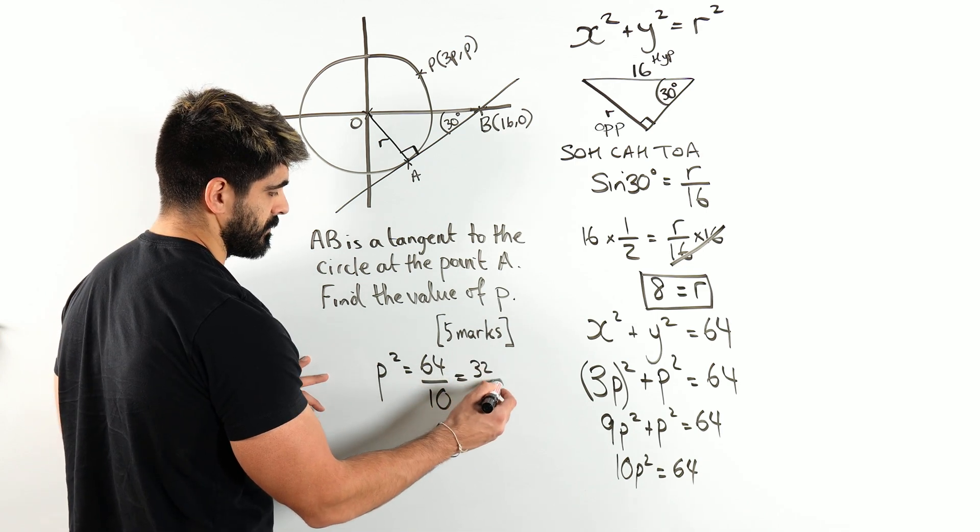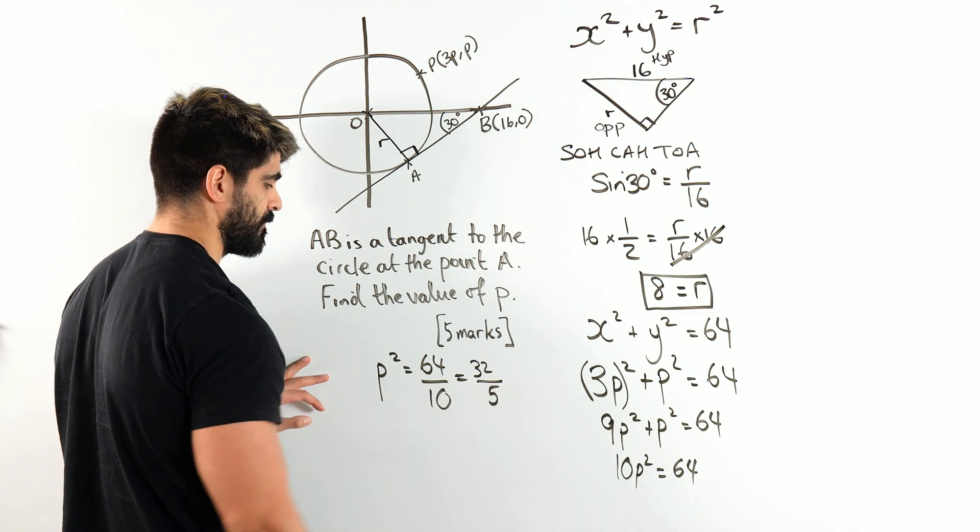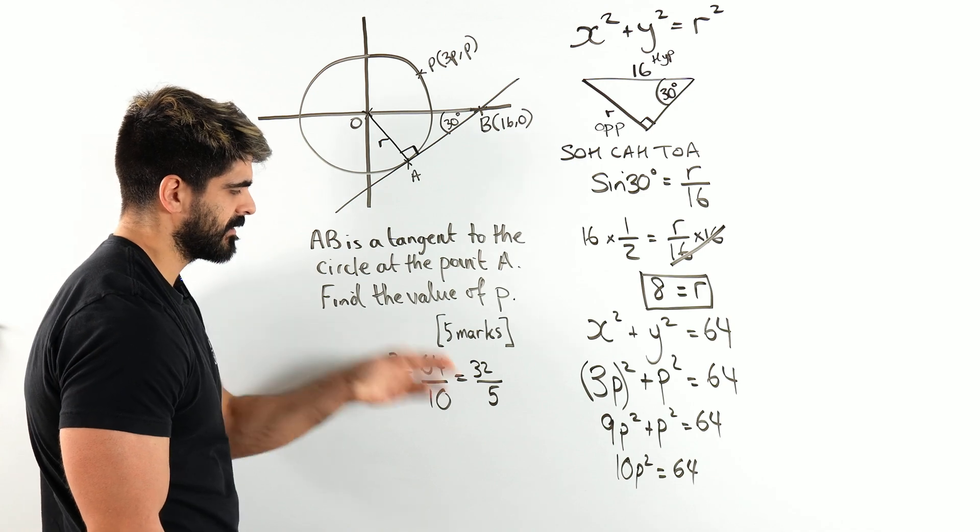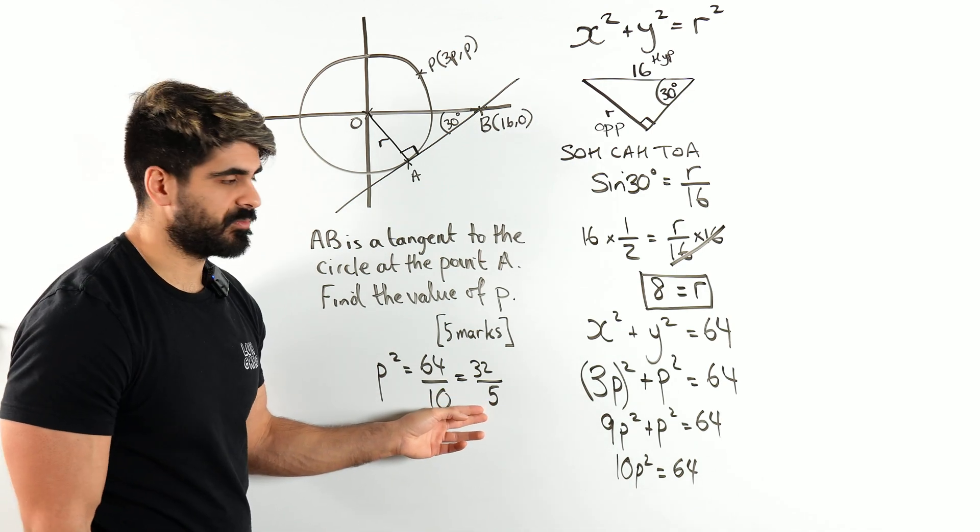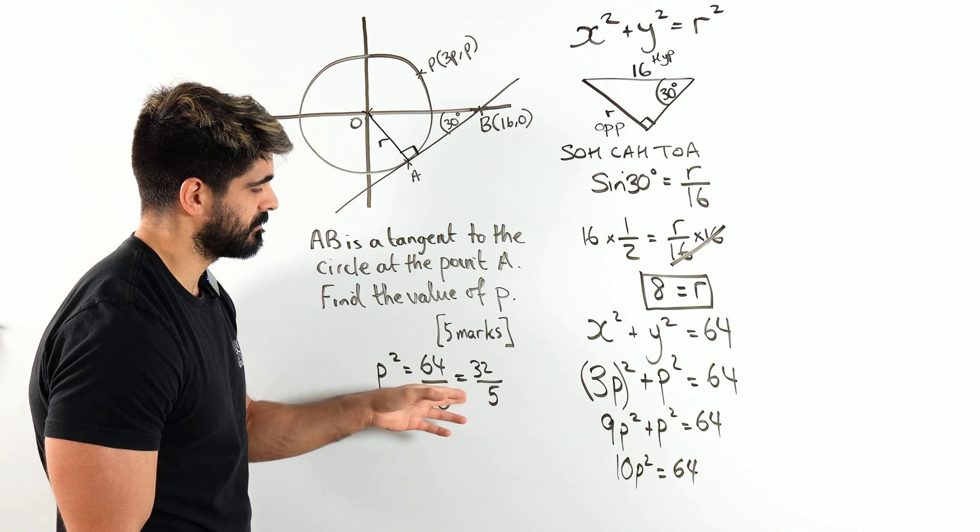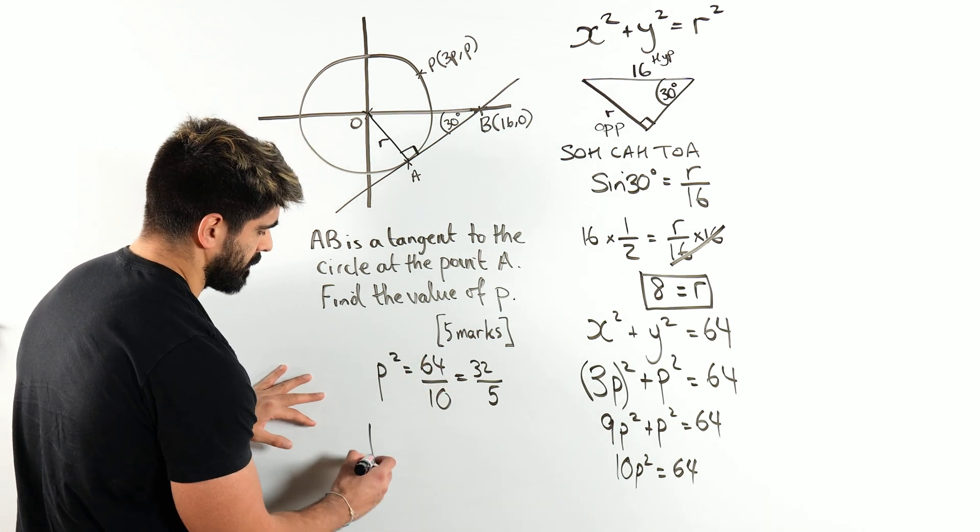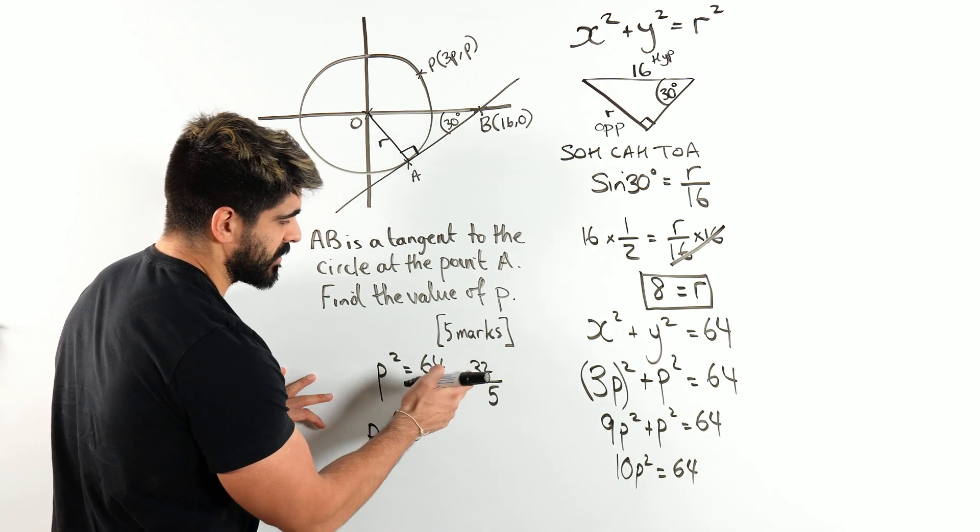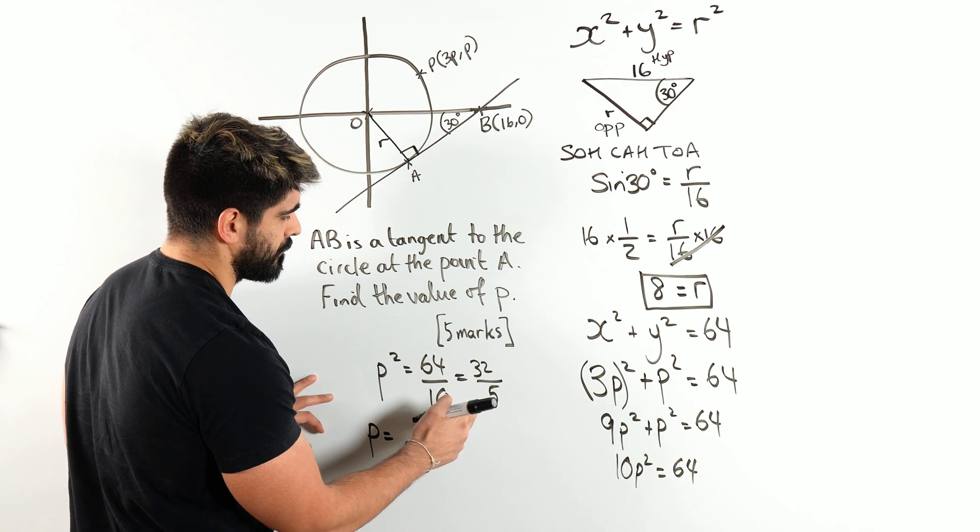Now we need to root this. We wouldn't write the whole root around the whole thing. We're going to have to simplify that. So I'm going to do this. When we square root, we need to square root the top and the bottom. Now p is obviously not going to be negative because it's in the positive quadrant.